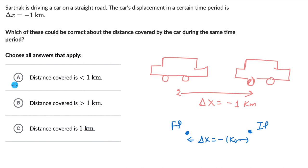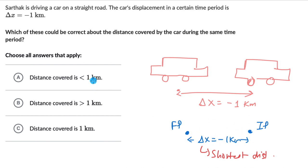The displacement tells us the shortest distance between these two points, which is 1 kilometer in magnitude. The minus sign is just telling us the direction — we assumed that the left direction is negative, so it's displaced by 1 kilometer to the left. That's what the minus sign means: it tells the direction, and 1 is the shortest distance between these two points. So option A is wrong — distance covered cannot be less than 1.